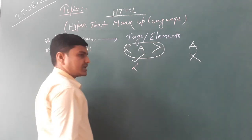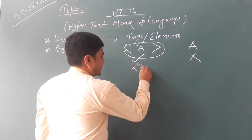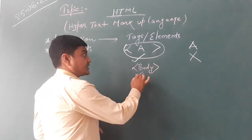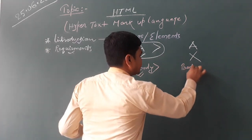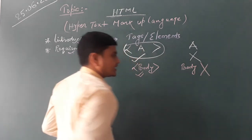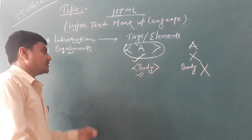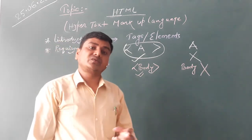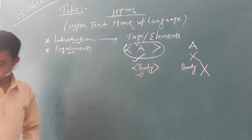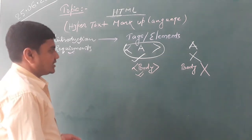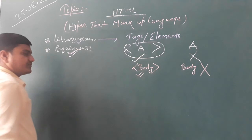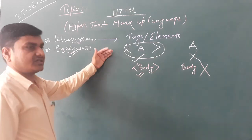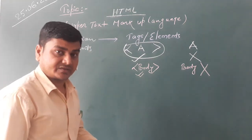Let's look at an example. If I write a left angle bracket and then 'body', this is a correct, true tag. But if I write the same as just 'body' without the angle brackets, this cannot be called a tag. So finally, tags are the basic commands and options that we use in HTML to develop the web page.